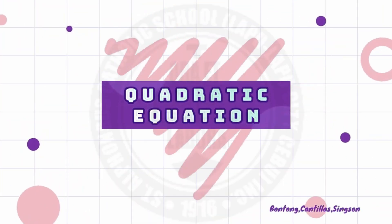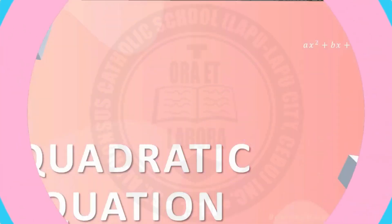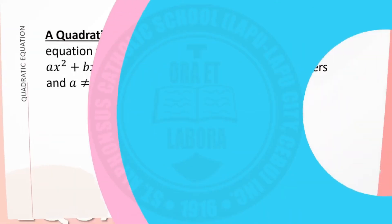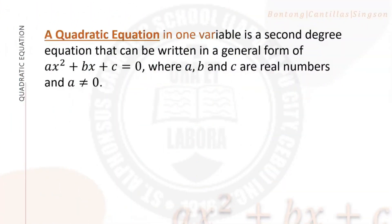Quadratic Equation. A quadratic equation in one variable is a second degree equation that can be written in the general form ax squared plus bx plus c equals 0, where a, b, and c are real numbers, and a must not be equal to 0.